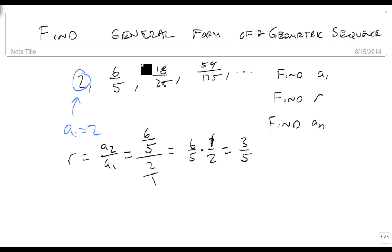Notice that that works. 6 times 3 is 18, and 5 times 5 is 25. 25 times 5 is 125, 18 times 3 is 54, so this is working. There's our R, there's our A1.